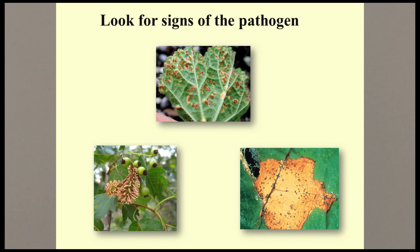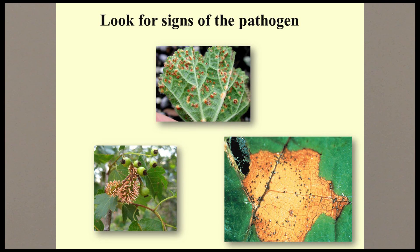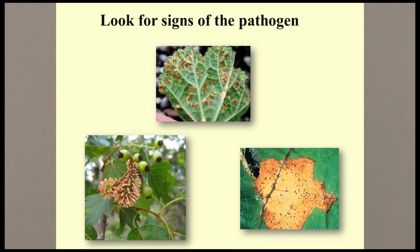The next step in diagnosis is to look for signs. Signs are part of the actual pathogen itself. Most of the signs we can see with the naked eye or a magnifying lens are fungal. The upper photo shows rust pustules on the underside of a hollyhock leaf infected with hollyhock rust — we would see yellow leaf spots on the upper surface as the symptoms. The photo in the lower right shows small black fruiting bodies in a black rot leaf spot on a grape leaf. The photo in the lower left shows the fruit of a hawthorn infected with quince rust; the orange structures are part of the rust fungus.